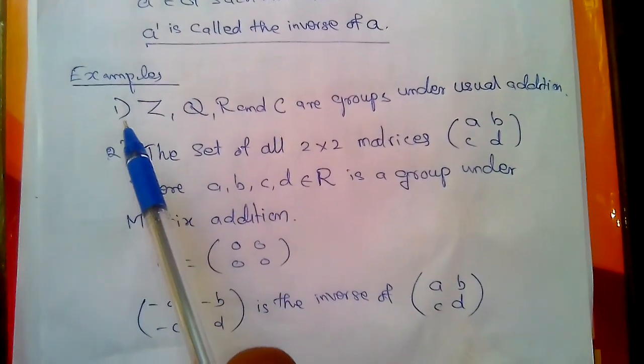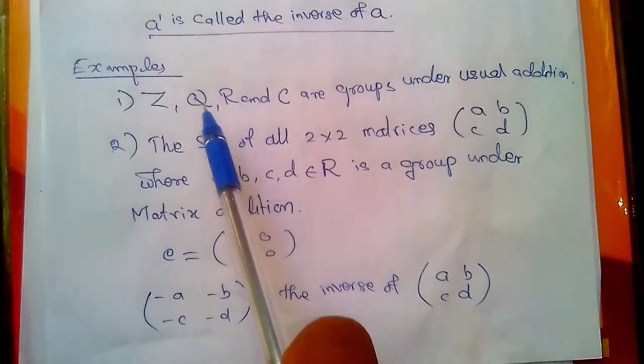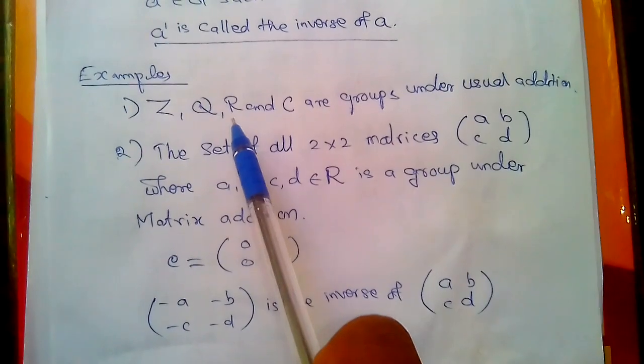Examples: These are examples of groups. First one is the set of all integers and rational numbers, R and C.